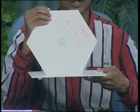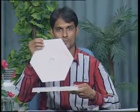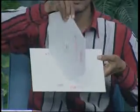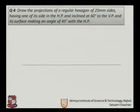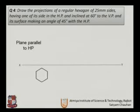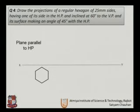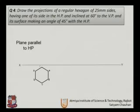If the plane is inclined to the HP, we first draw the true shape, which is visible in the front view, then incline it. From the top view it appears reduced. Step by step, we obtain the XY line, and since the plane is parallel to the HP initially, we draw the true shape of the hexagonal plane with 25 mm sides, labeling vertices A, B, C, D, E, F.